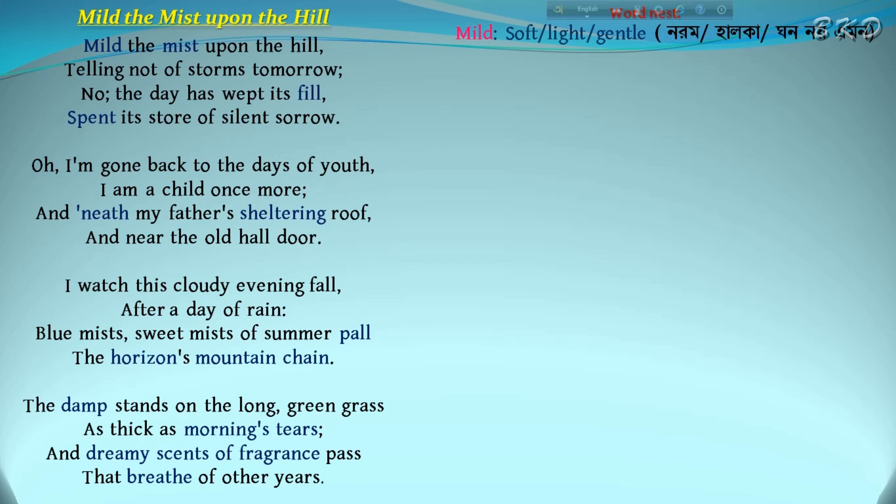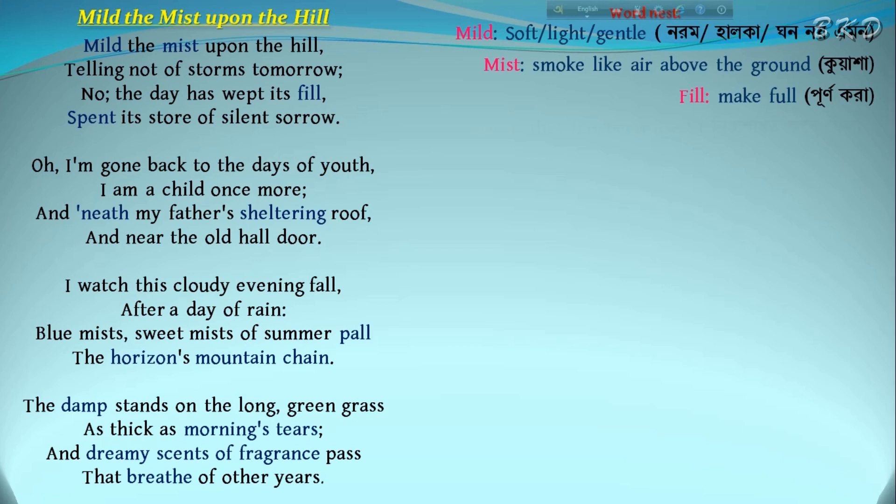I watched this cloudy evening fall after a day of rain. Blue mist, sweet mist of summer's pearl, the horizon's mountain chain. It has rained throughout the day, and now evening approaches gradually. On this cloudy evening, the poet observes sweet, dreamy mist upon the hill. The mist looks like a thick cloud of summer, and the row of mountains that seem to create the horizon is covered with this blue mist.